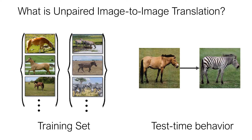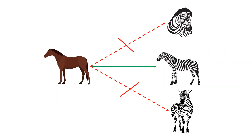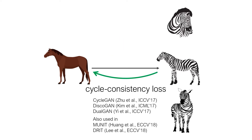By sensible translation, I mean, for example, we want the translated zebra to retain some resemblance to the horse image such as pose or size. To achieve this, many image-to-image translation methods such as CycleGAN, Munit, and Drake use cycle consistency loss.